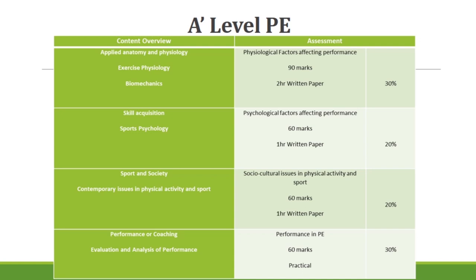Moving to component two in the specification, which covers skill acquisition and sport psychology. The assessment paper is called Psychological Factors Affecting Performance. This is worth 60 marks, a one-hour written paper, and worth 20% of the overall qualification marks.